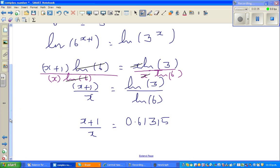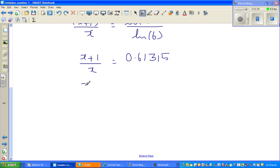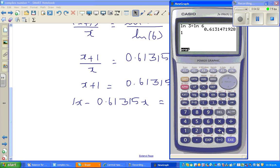Now I'm going to cross multiply, so x plus 1 is equal to 0.61315x. Bringing the x terms together: 1x minus 0.61315x is equal to negative 1.